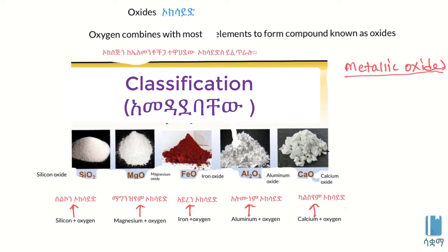Calcium is a metallic element. When calcium reacts with oxygen, it forms calcium oxide.